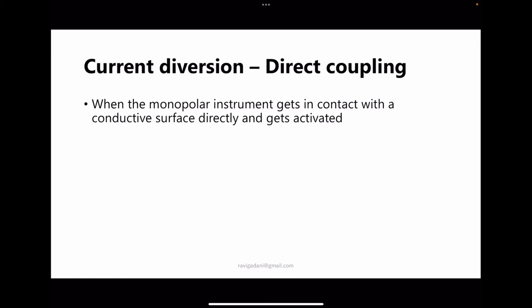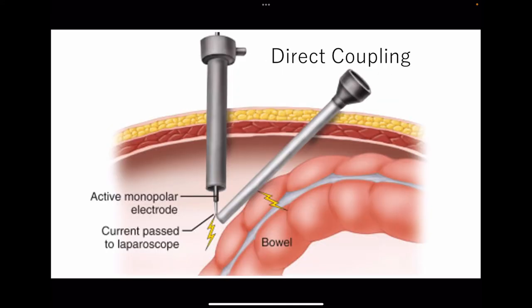Direct coupling is the second current diversion mechanism: when a monopolar instrument directly contacts a conductive surface and gets activated. For example, the monopolar hook touching the metal cannula of another port — current passes through and can damage adjacent bowel. This mechanism is also used intentionally in open surgery: holding a bleeder with toothed forceps and touching those forceps with the active electrode. However, any integrity issues with surgical gloves can result in the surgeon receiving some current.